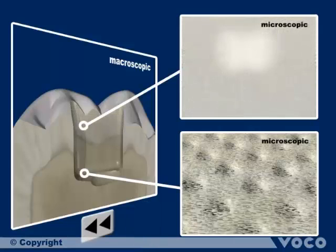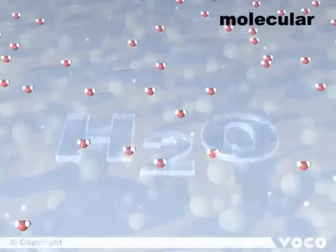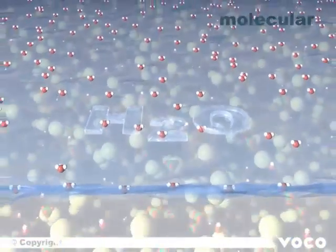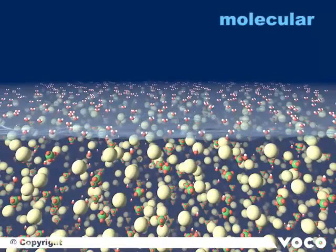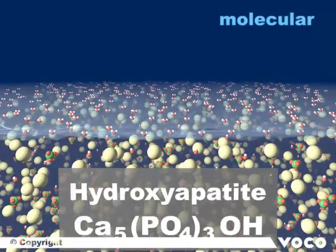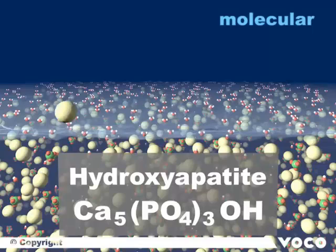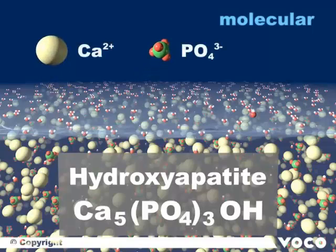By looking again at the process on molecular level, we will understand how the chemical mechanism of the connection between tooth substance and composite material works. Due to the preparation, there is a thin water layer on the tooth. Hydroxyapatite, the main component of the tooth, consists of calcium, phosphate and hydroxy ions.